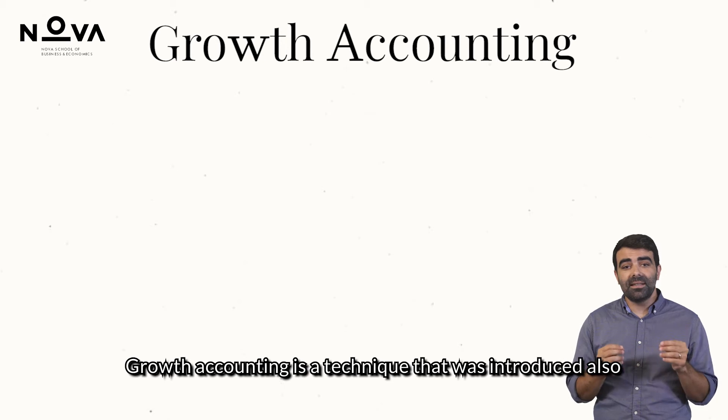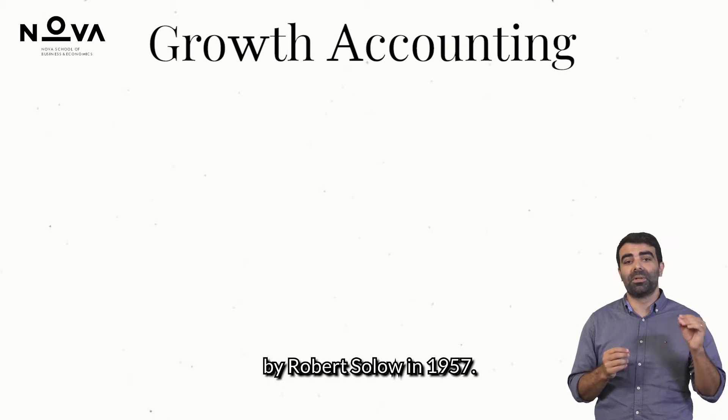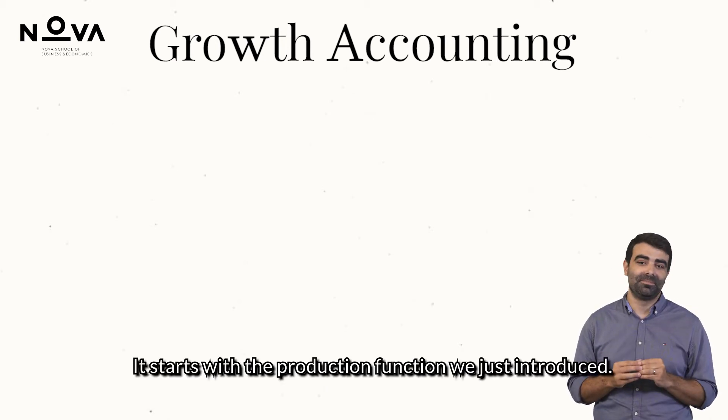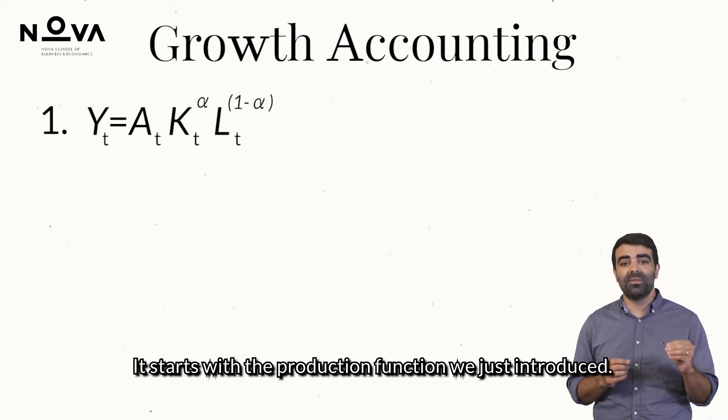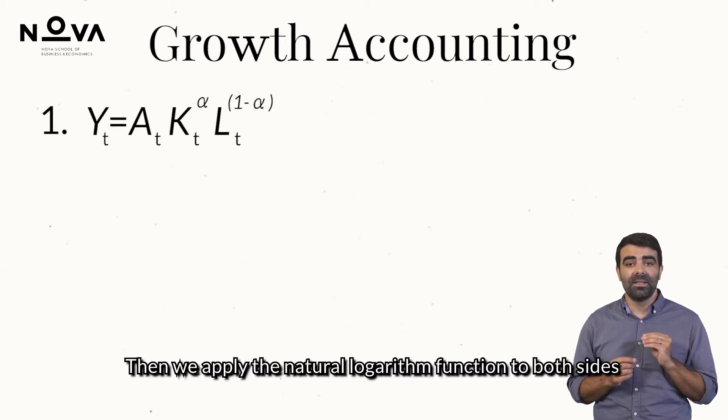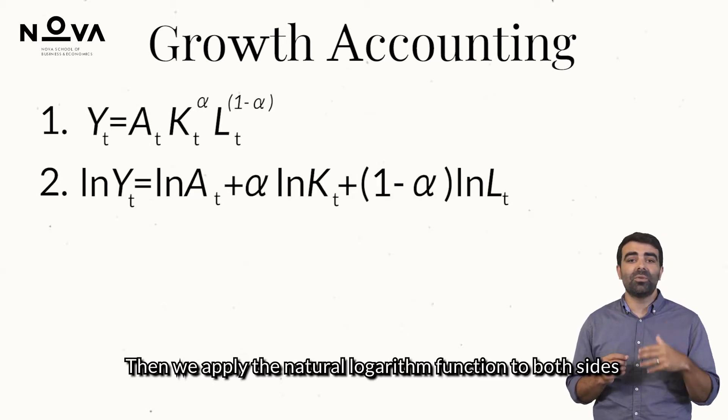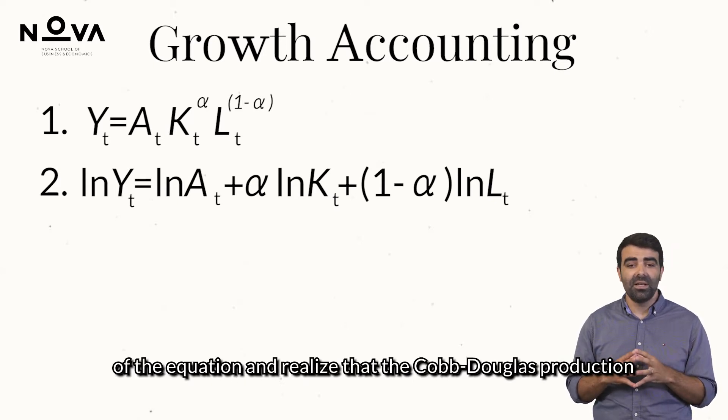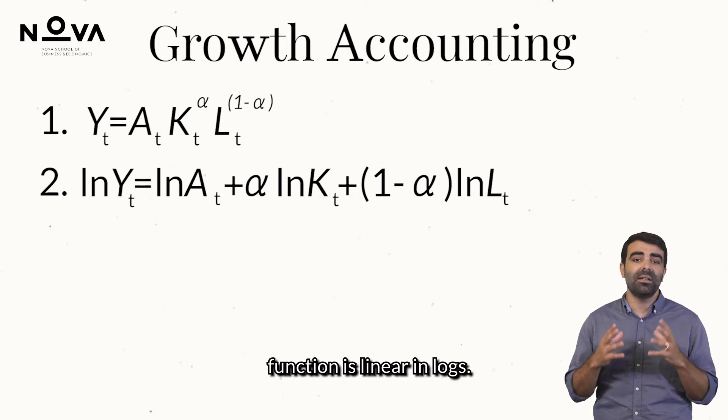Growth accounting is a technique that was introduced also by Robert Solow in 1957. It starts with the production function we just introduced. Then, we apply the natural logarithm function to both sides of the equation, and realize that the Cobb-Douglas production function is linear in logs.